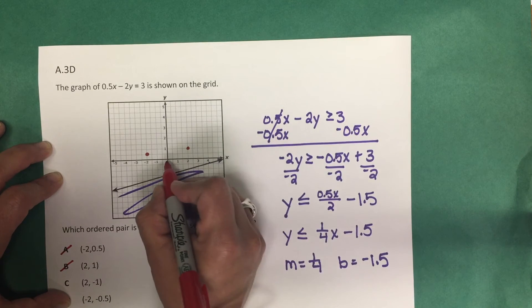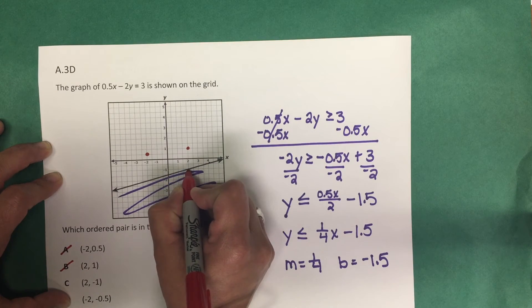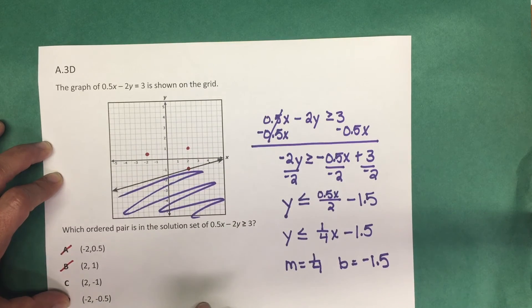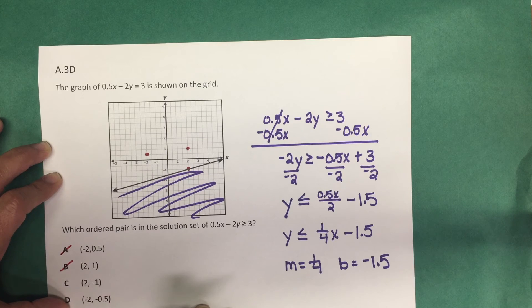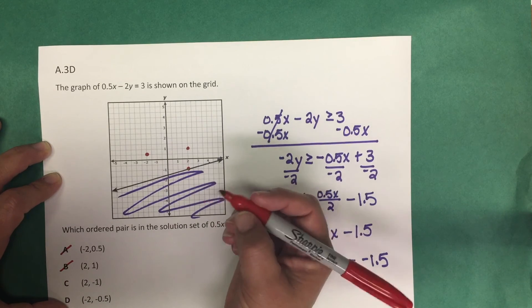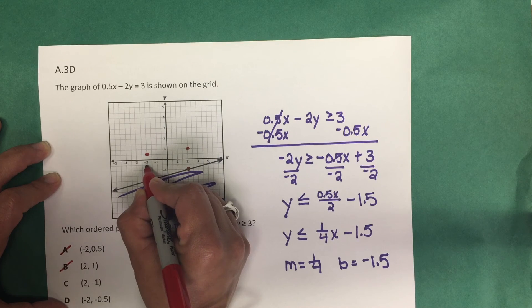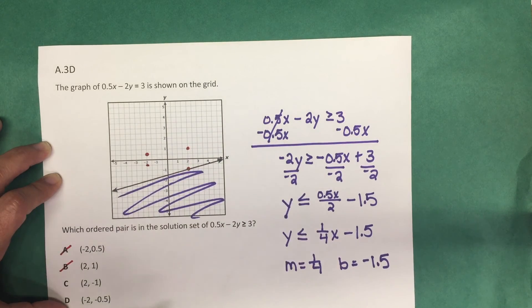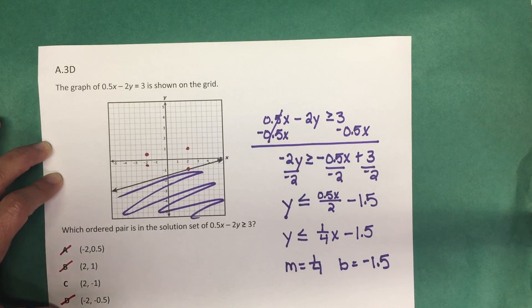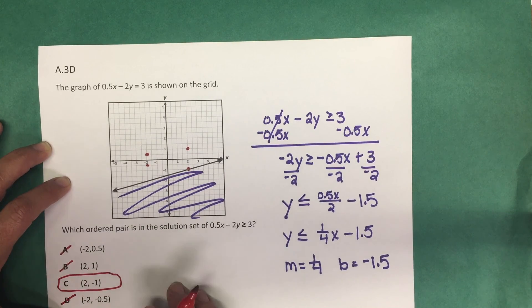Next, the point 2, negative 1: from the origin two units to the right and one unit down, and that lies on the line. Since the line is solid, it is part of the solution set. Checking the last option, negative 2, negative 0.5 — two units left and half a unit down — that does not lie in the solution set. So the correct answer is 2, negative 1.